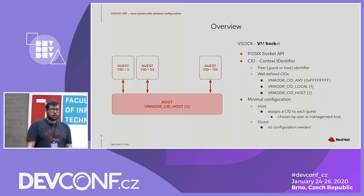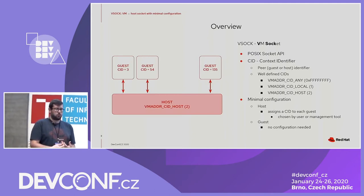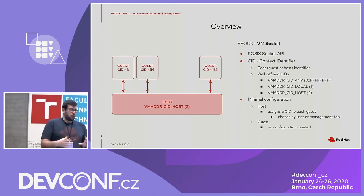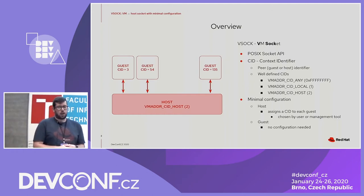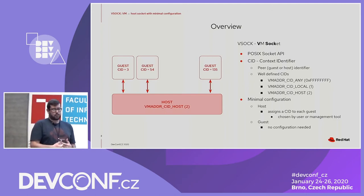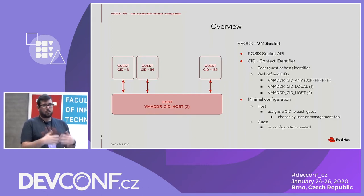VSOCK is the acronym of VMSocket. It allows you to create a communication channel between guest and host using the standard POSIX socket API. A peer — a guest or a host — is addressed by a context identifier, CID. We have well-defined CIDs. For example, CID_ANY is used for listening on any CID.